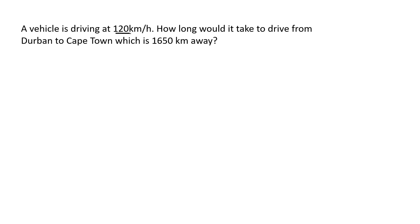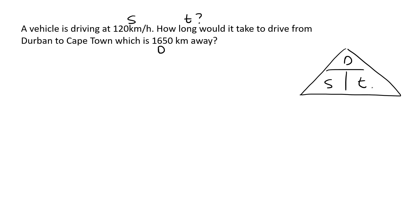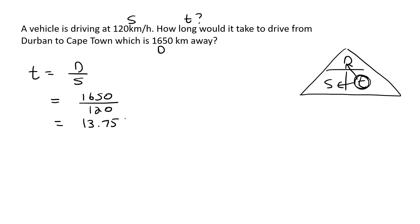Here's another one. A vehicle is driving at 120 kilometers per hour — that's a speed. How long will it take to drive from Durban to Cape Town, which is a distance of 1,650 kilometers? So we're looking for time, and we already know the distance and the speed. Time equals D over S, so that's 1,650 divided by 120. Type that into your calculator and you get 13.75. What units? Think about it — kilometers and hours — so it's definitely 13.75 hours.